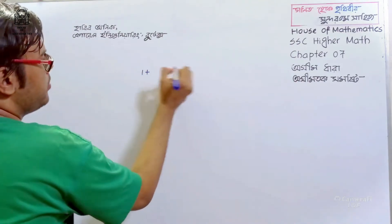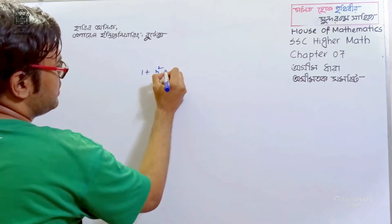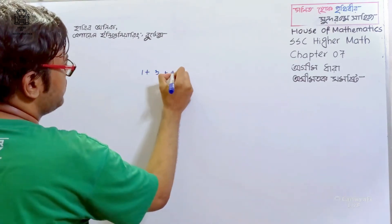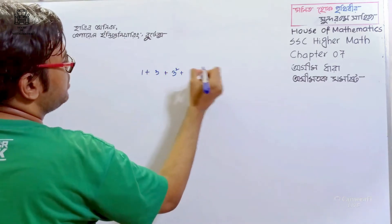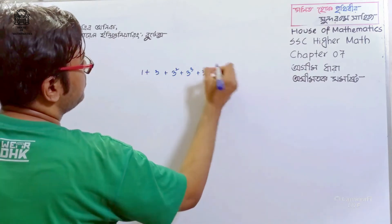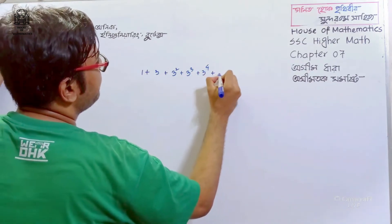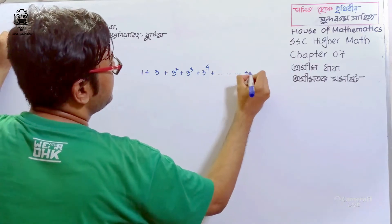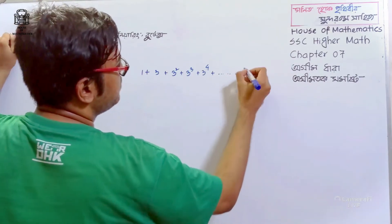We are going to talk about 1 plus 3 squared. The second thing is 1 plus 3 squared, then 3 squared, 3 cubed, 3 to the power of 4, and the next step goes to infinity.